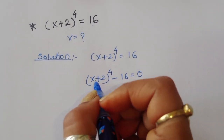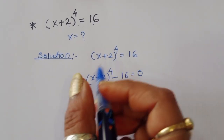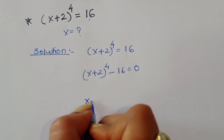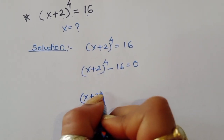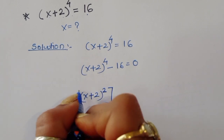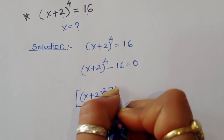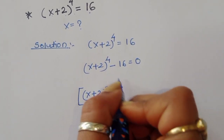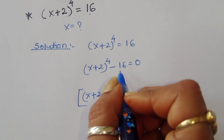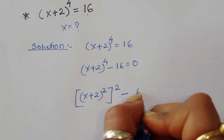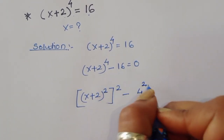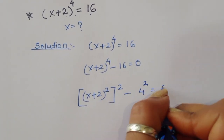Now, (x + 2)⁴ — this power 4 we can write as (x + 2)² whole squared. And this 16 we can write as 4², so we have [(x+2)²]² minus 4² equal to 0.